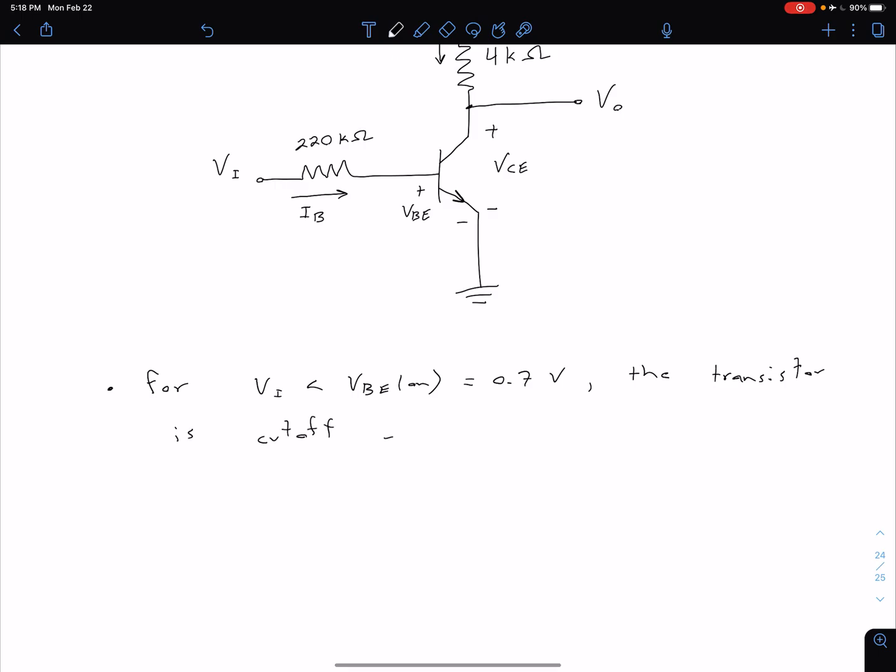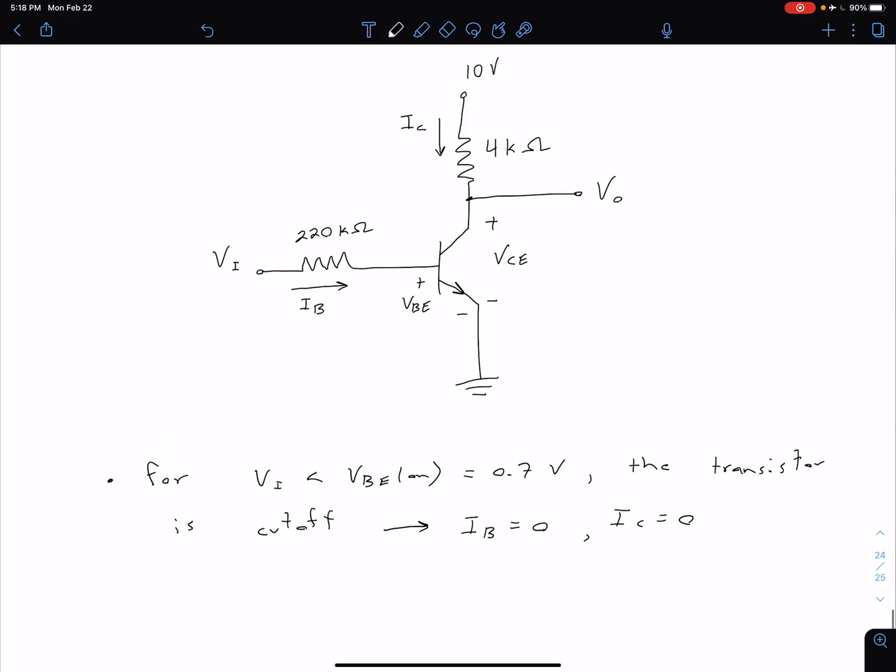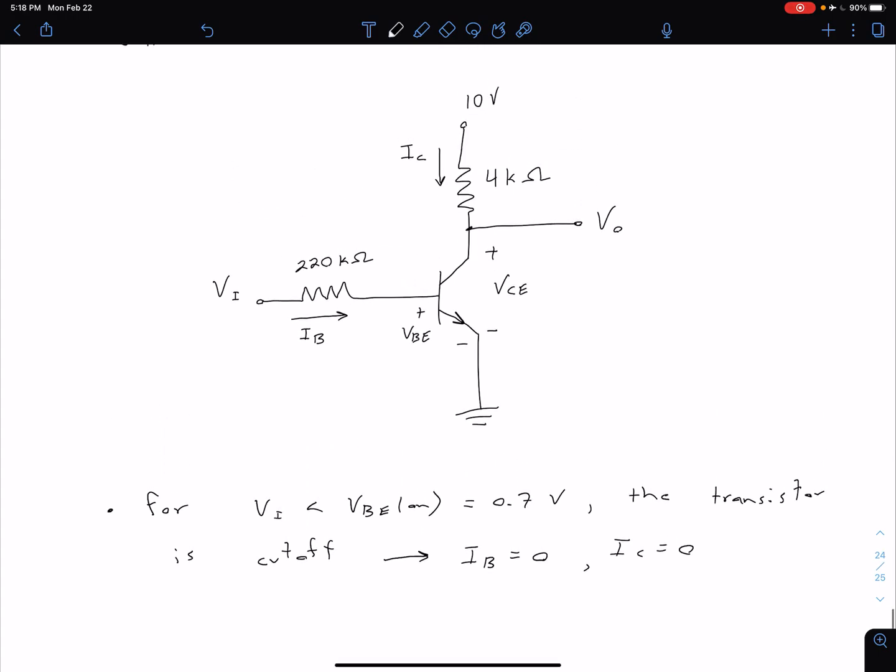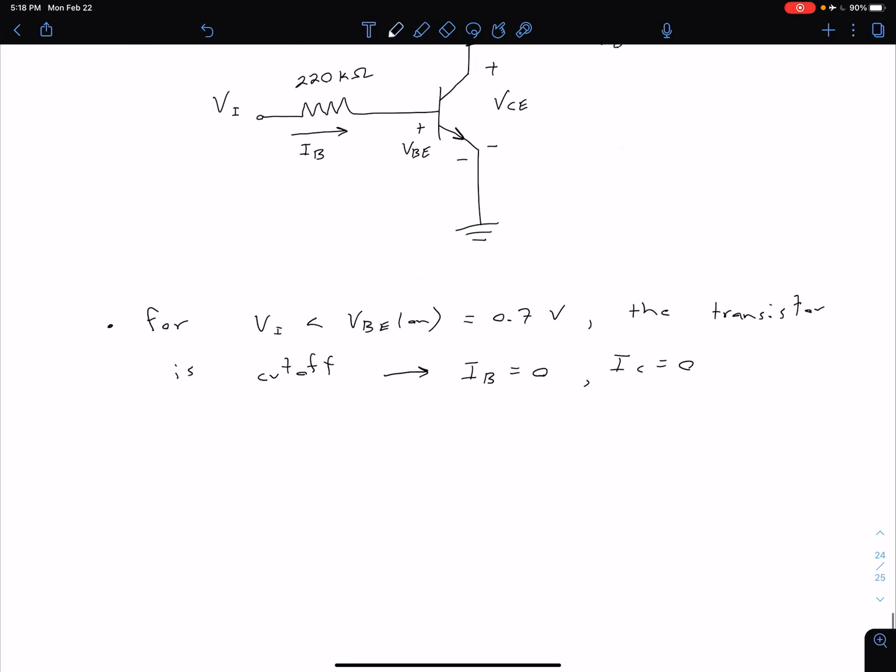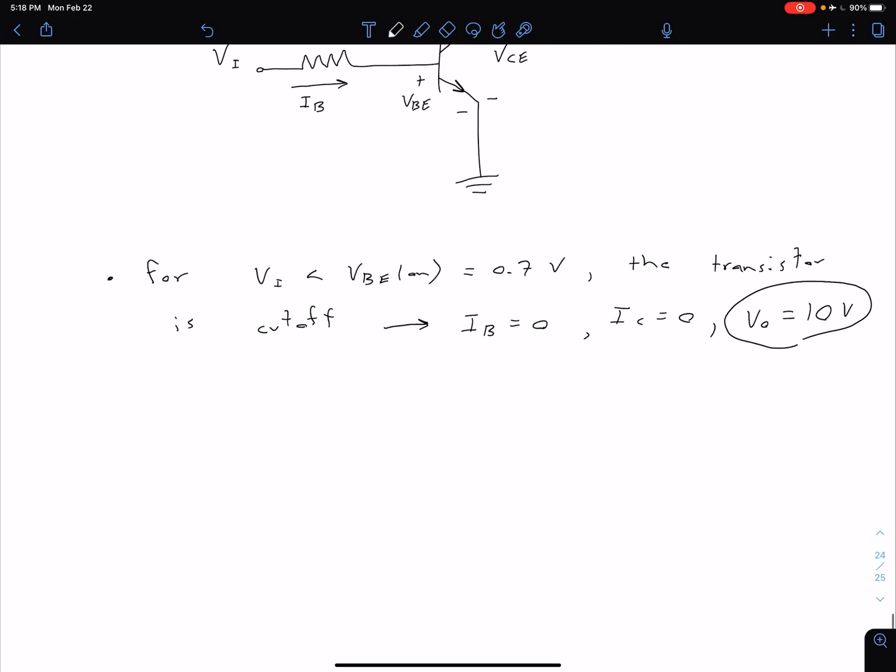What that means is that we have 0 base current and 0 collector current. Coming back up here for this particular circuit configuration, how we've defined our input and output, if we have 0 collector current we have 0 voltage across this 4k resistor which means that our output voltage is going to be 10 volts.